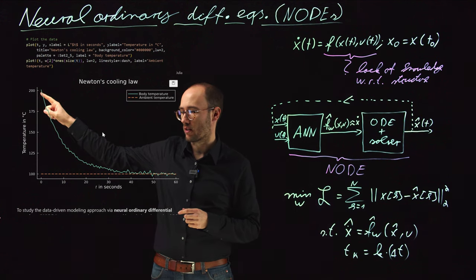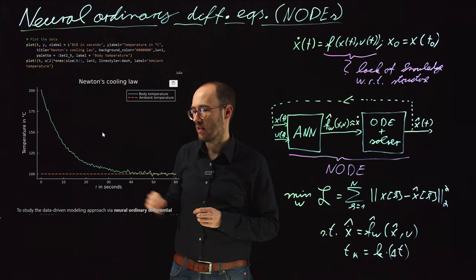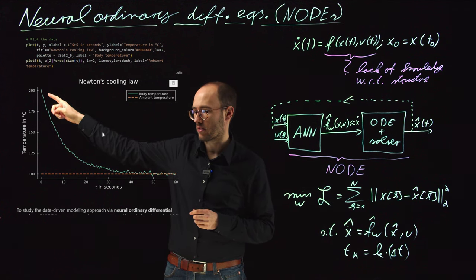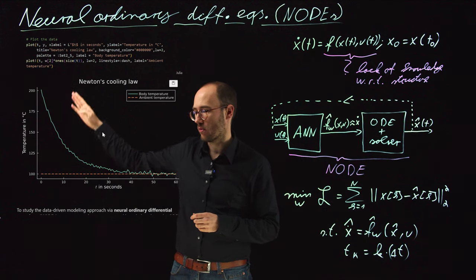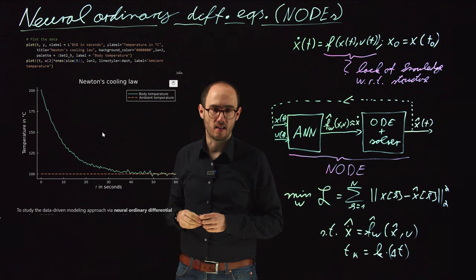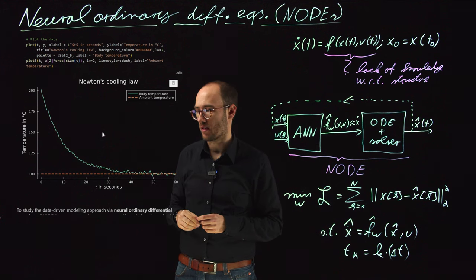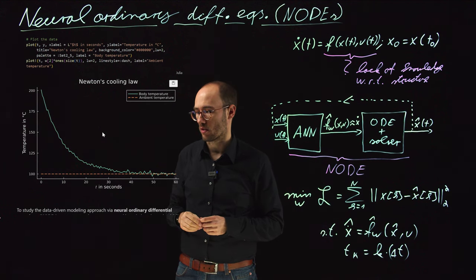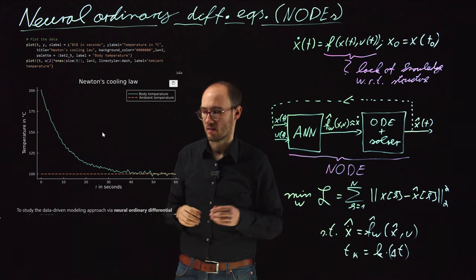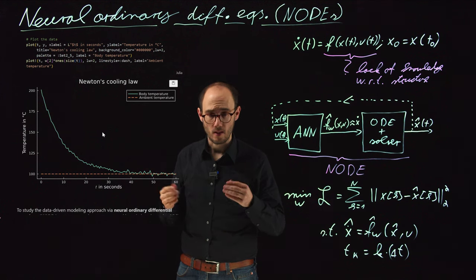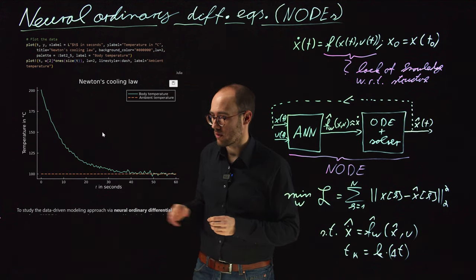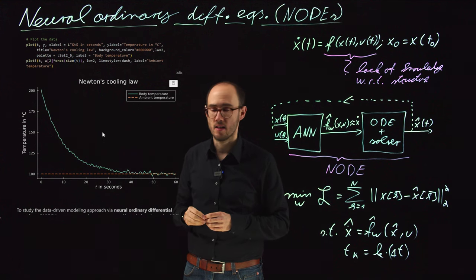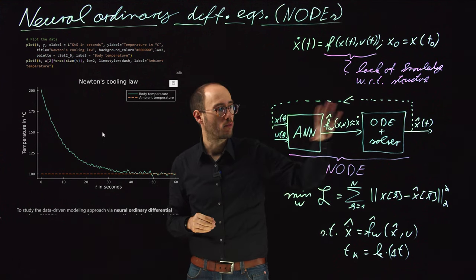The ground truth system response assumes our metal element is heating up to 200 degrees Celsius, with an ambient temperature of 100 degrees Celsius. Including some measurement noise, we see a first-order decay of the body's temperature, approximately converging to the ambient temperature — which is expected given Newton's cooling law. This greenish data trajectory is our ground truth data, and now we apply the NODE approach.